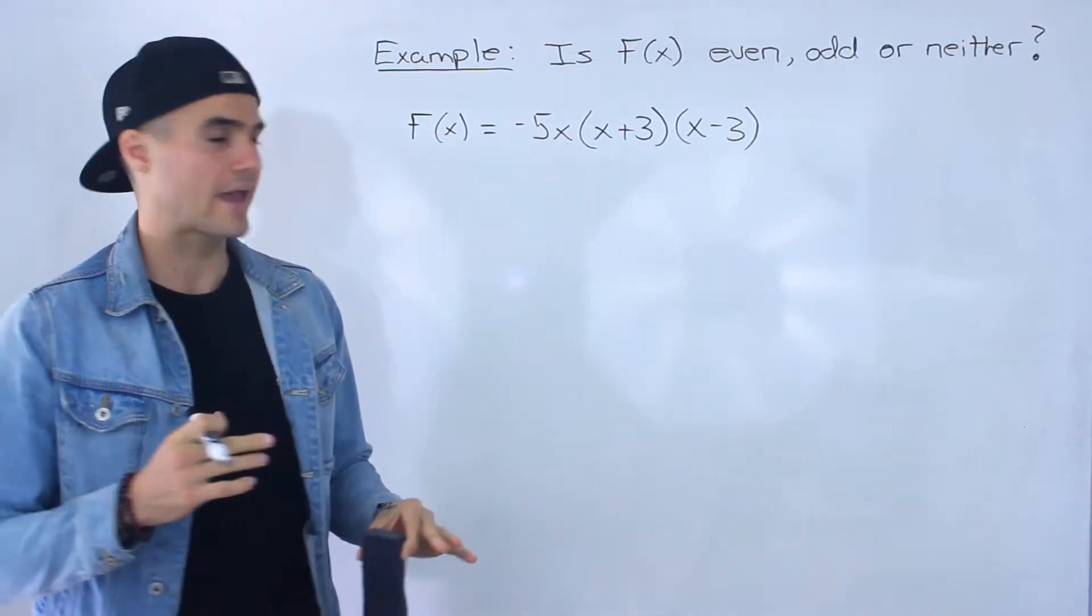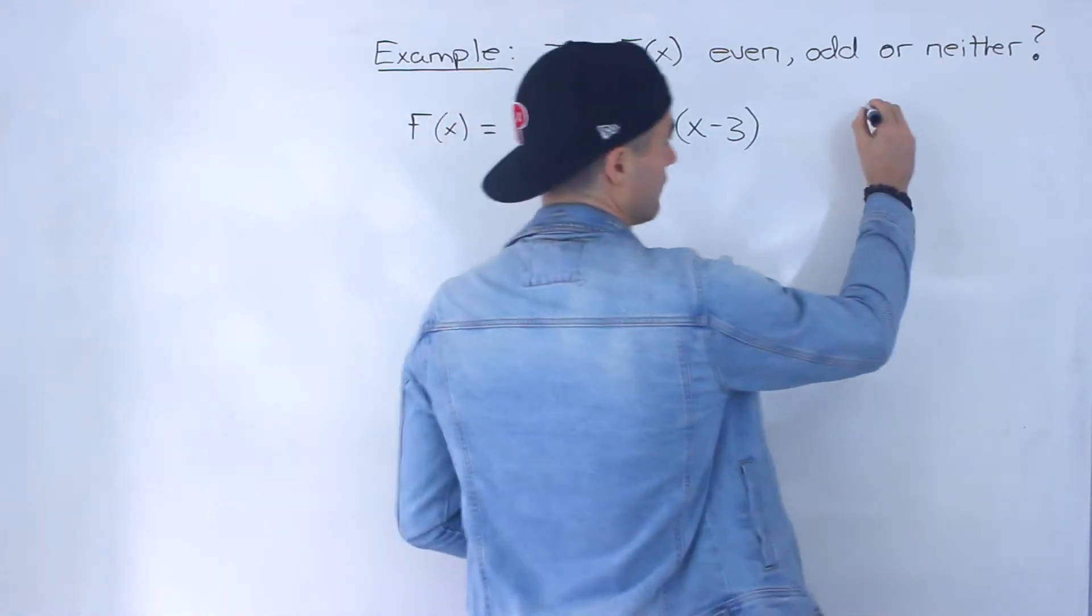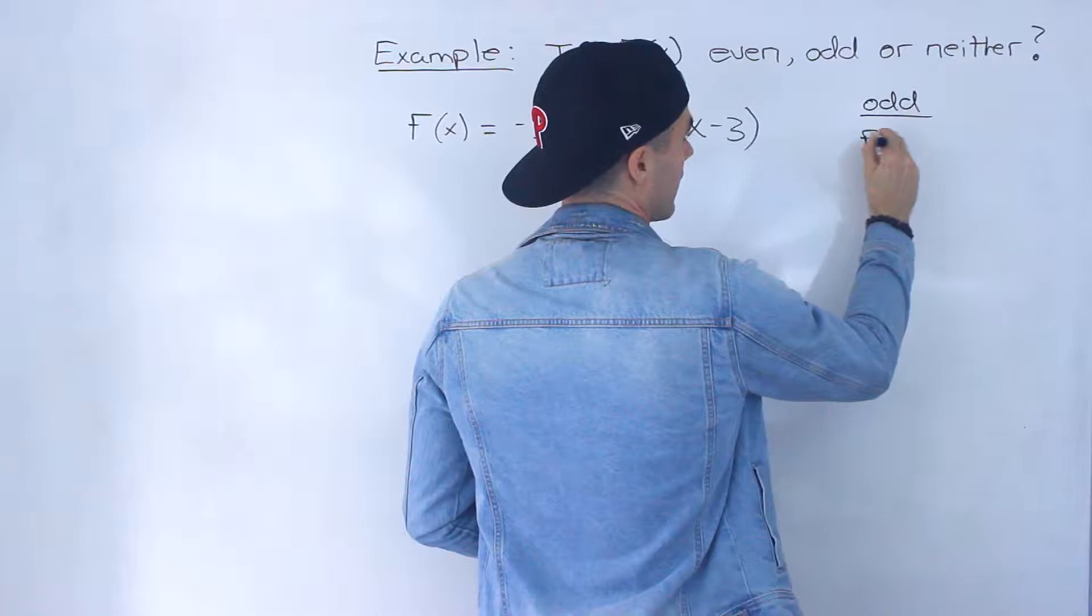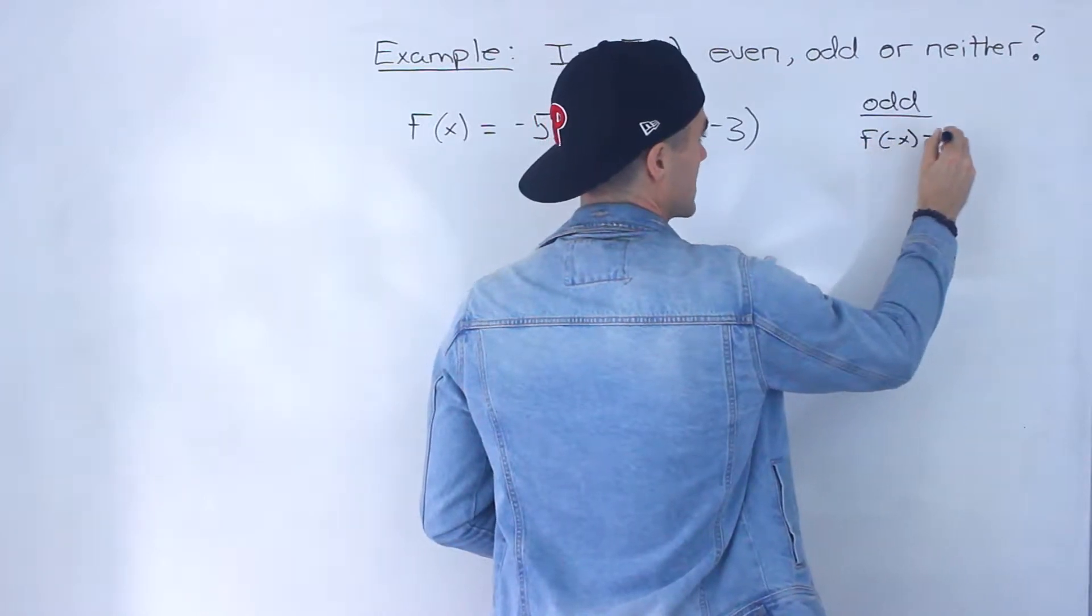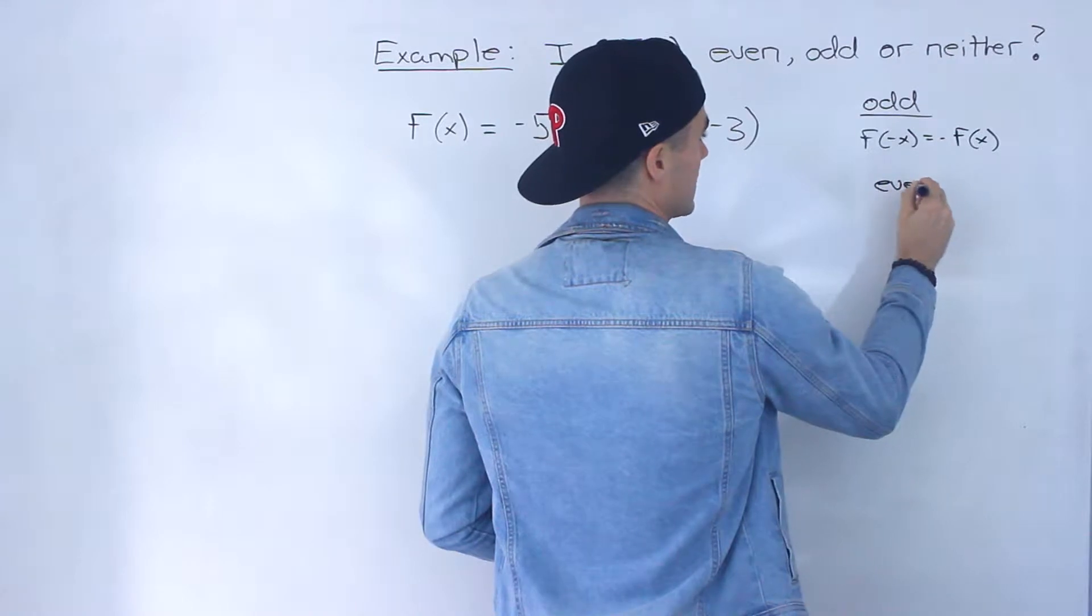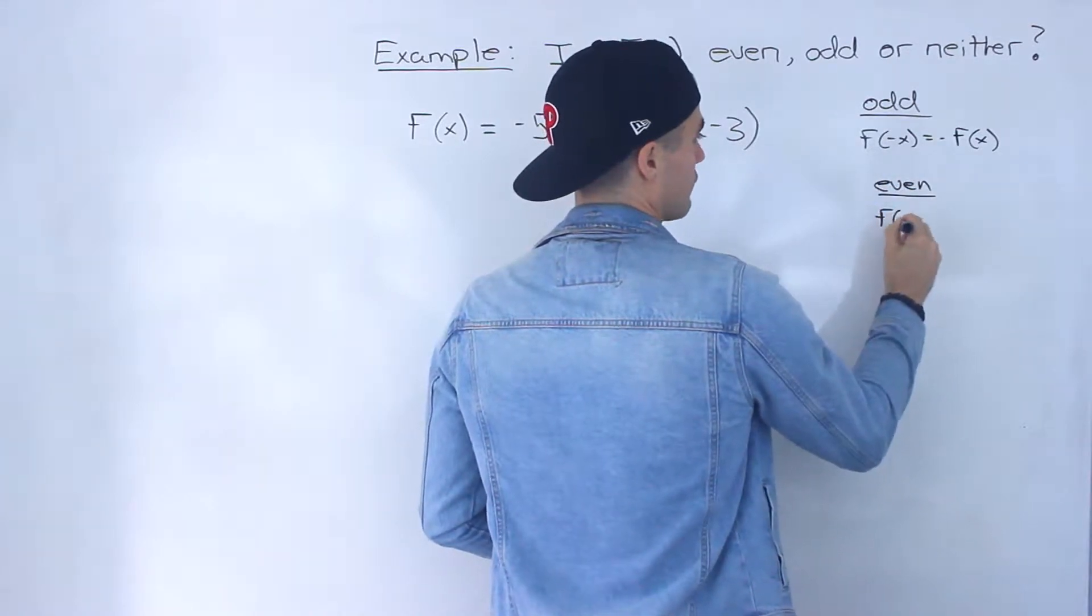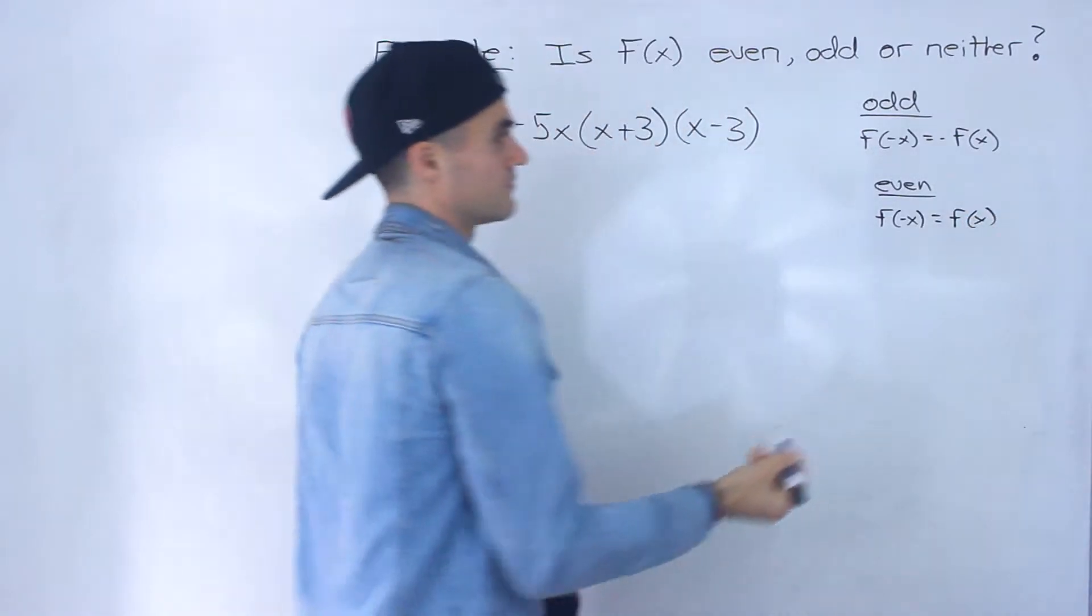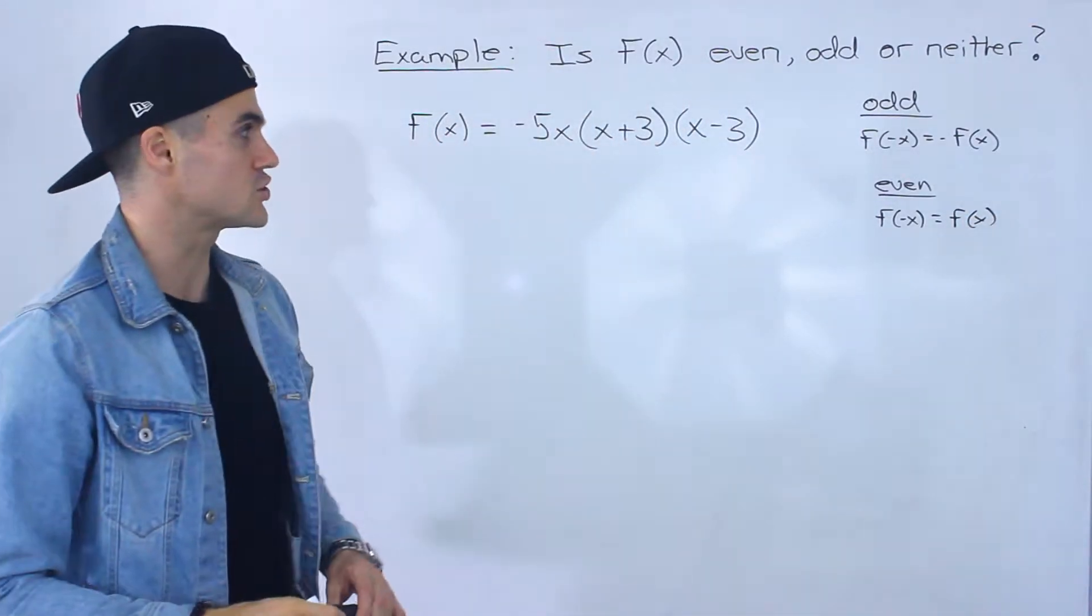So to do a quick recap of symmetry, we know that a function is going to be odd if f of negative x equals negative f of x, and we know a function is going to be even if f of negative x equals the original function f of x. That's how we can algebraically check this.